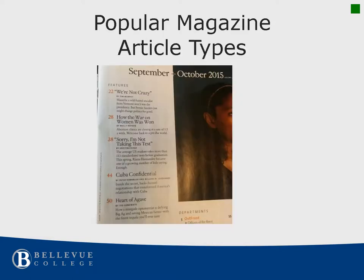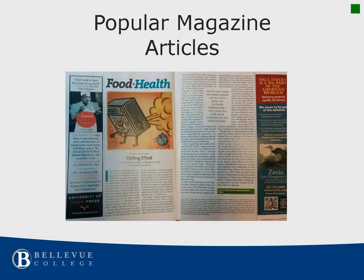Here is the table of contents for this issue. Notice the article titles are catchy: 'We're Not Crazy' and 'How the War on Women Was Won.' Here is one of the articles from that magazine. It is very interesting, but where are the references at the end? If I find something I want to follow up on in this article, how can I get more information?